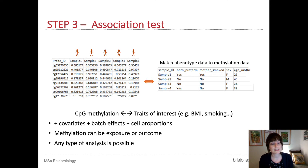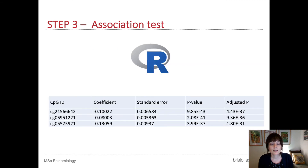DNA methylation can be the exposure or the outcome in our EWAS model, and any type of statistical analysis is possible. Linear regression with methylation as the outcome is the most common, but logistic regression and other types with binary or ordinal outcomes are all possible. It depends on the study design and the hypothesis. We usually use R to run our EWAS and there are many packages written specifically for this purpose.